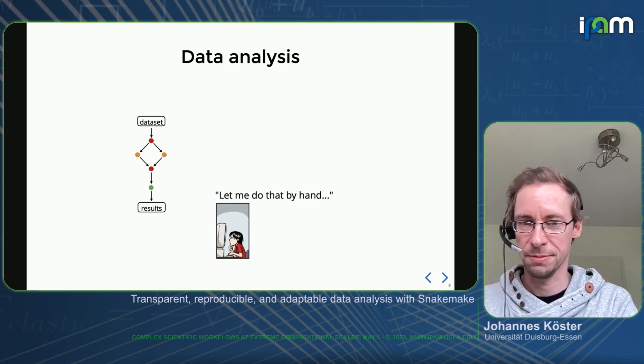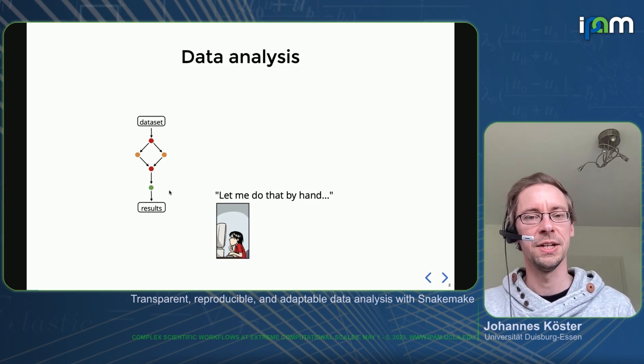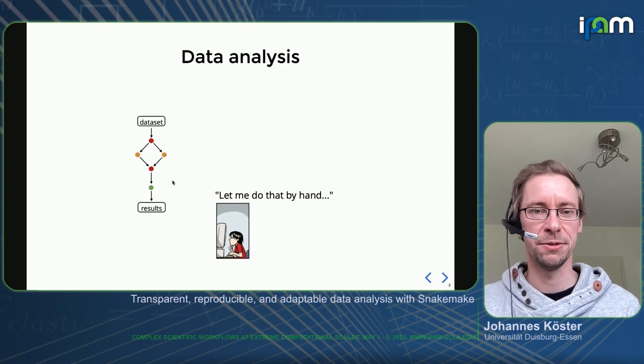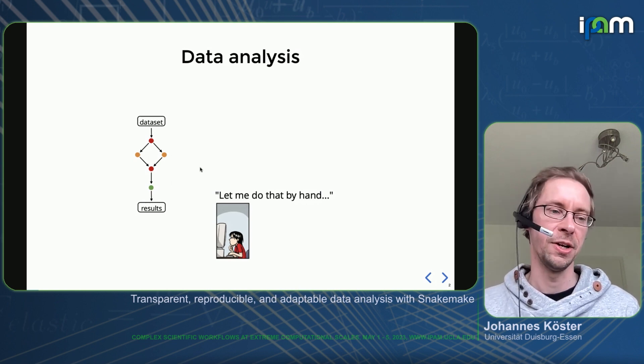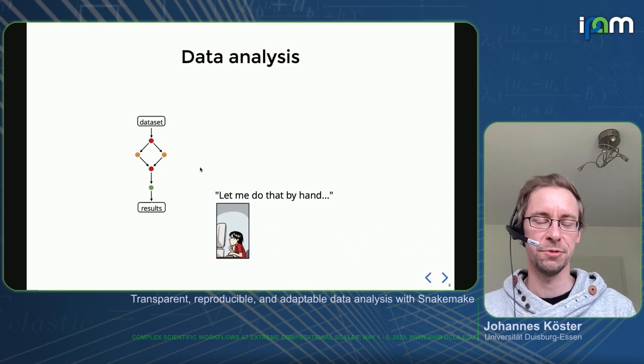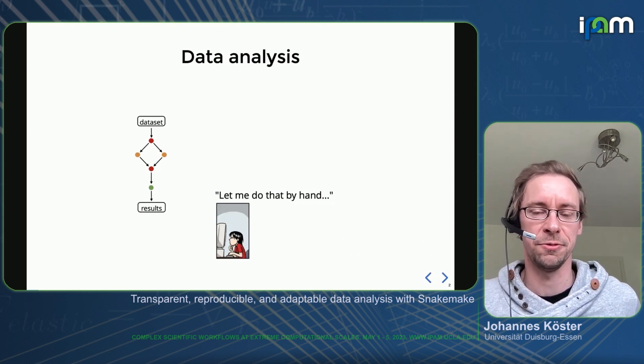Just so we are all on the same page, I want to quickly summarize what a data analysis is. That is usually the process going from some kind of raw data — which could be a measurement or some other kind of data set — to some kind of final results. Usually this process is quite heterogeneous, consisting of lots of steps that convert data formats, transform data, filter data, aggregate data, create plots, and so on.